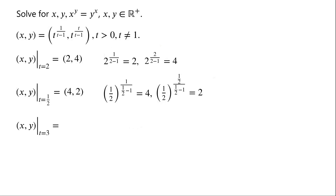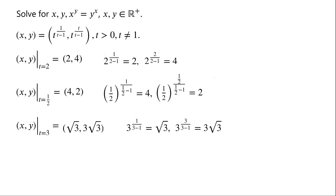A solution for t equals 3: since 3 to the power of 1 over (3 minus 1) equals root 3. And 3 to the power of 3 over (3 minus 1) equals 3 to the power of 3/2, which is 3 root 3. So the solution for t equals 3 is (root 3, 3 root 3).